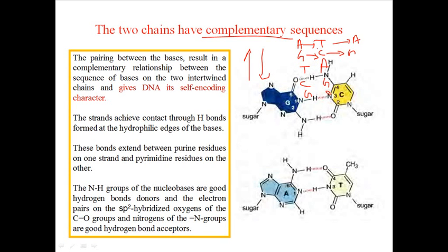This is the complementary nature of base pairing present in DNA. Why does this complementary nature exist? Because it gives a relationship between the sequences — it results from the base pairing pattern. Using Chargaff's rule: adenine has to pair with thymine, and guanine has to pair with cytosine.